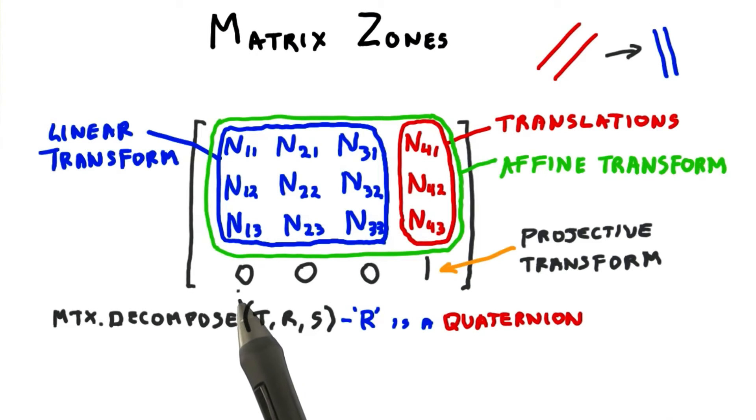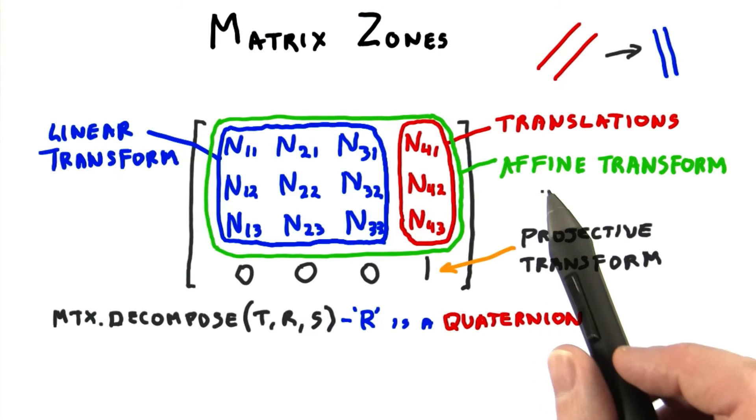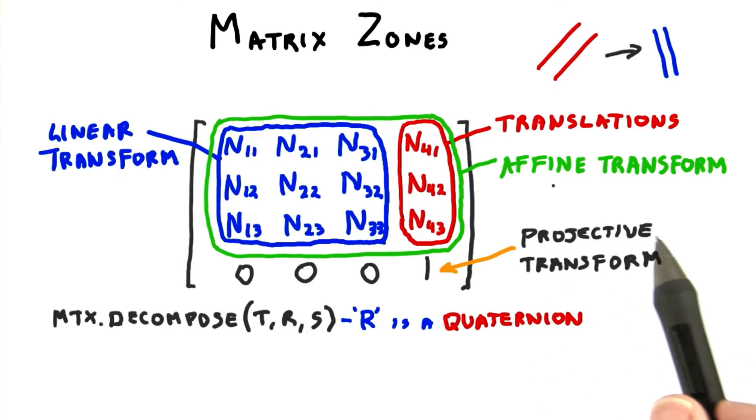When we discuss perspective cameras, we'll set the values in this last row. We'll then be using a projective transform. With affine transforms, when a point's coordinates are multiplied by the matrix, the 4th coordinate starts out as 1 and ends up as 1. This last row in a projection matrix modifies that 4th coordinate to be something other than 1. What that means is something we'll leave until a later lesson.